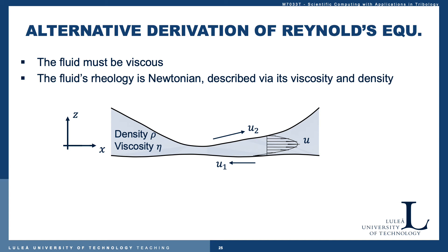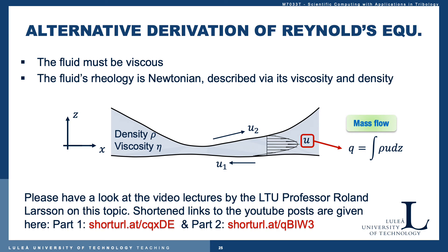In the literature there is frequently found an alternative derivation of the Reynolds equation which is based on that the fluid must be viscous and that the fluid's rheology is Newtonian, described by its viscosity and density. The velocity field defines the mass flow by integrating the density times the velocity over the gap height. That's the mass flow; if you just integrate the velocity, it's the volume flow. This derivation may be found in other YouTube videos, two of them by LTU professor Roland Larsson, part one and part two here with shortened URLs for you to pause and key in.